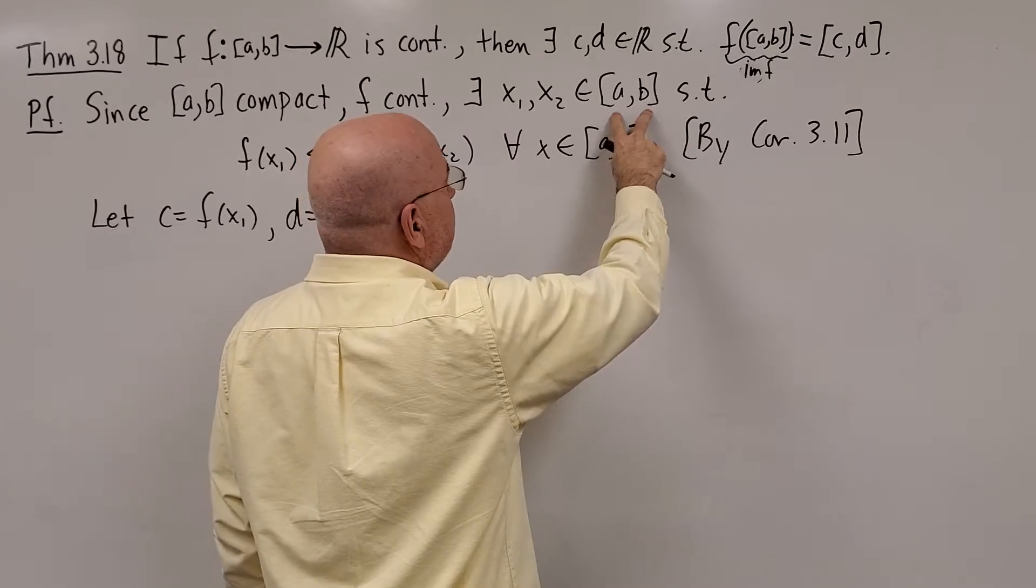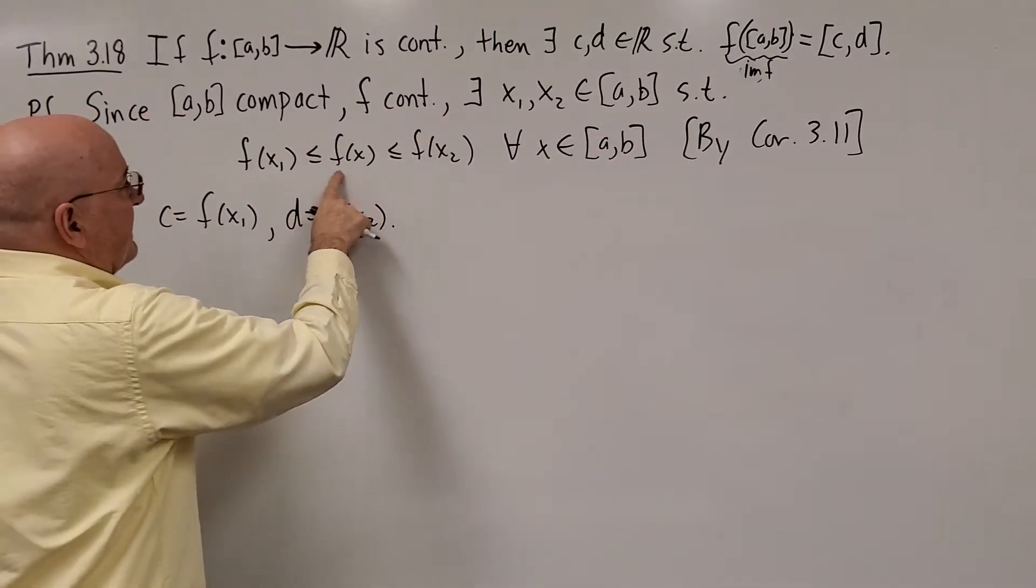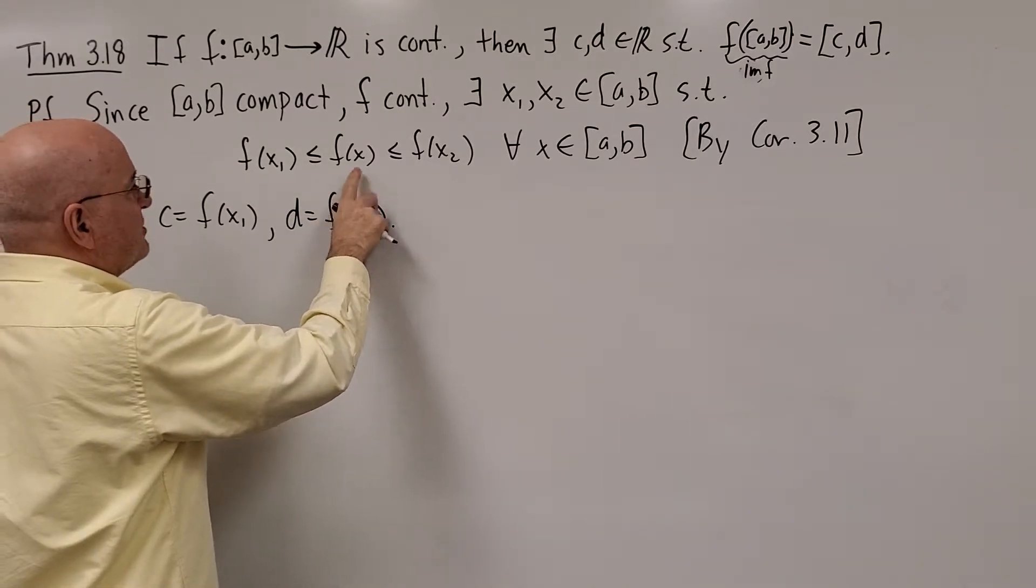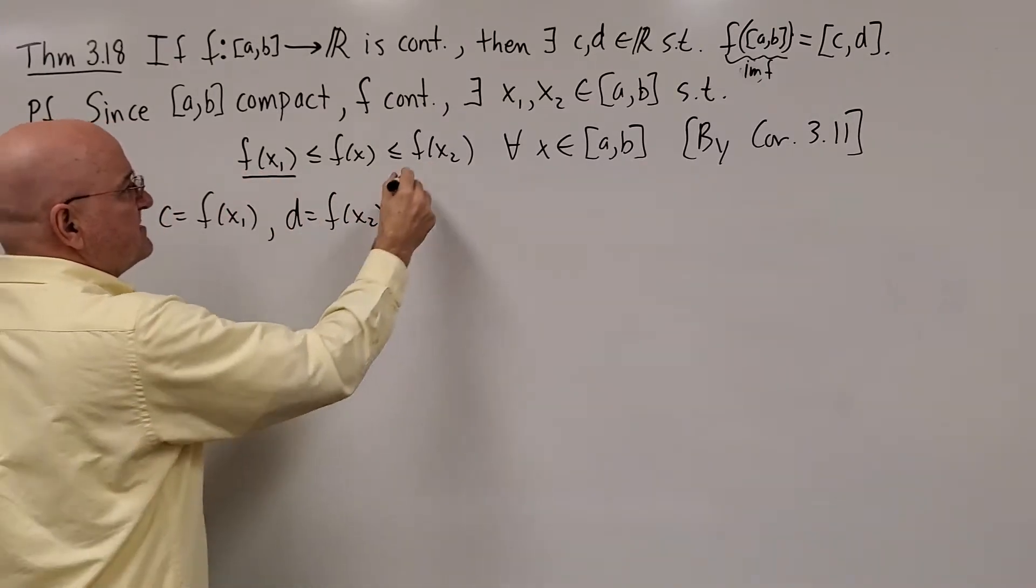Either one of them could be such that F of x for all values of x between A and B fall between F of x1 and F of x2. This is the minimum height on the graph, this is the maximum height on the graph.